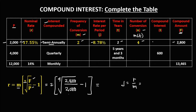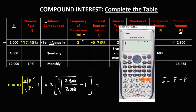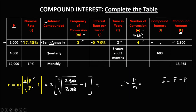To solve for the compound interest I, I equals the compound amount minus the principal. So 2,800 minus 2,000 equals 800. Therefore the compound interest is 800.